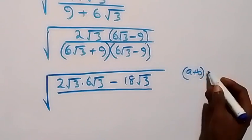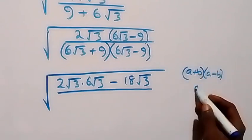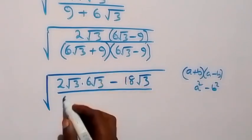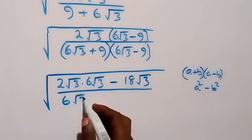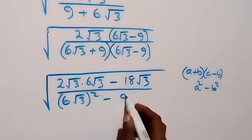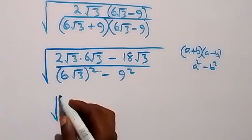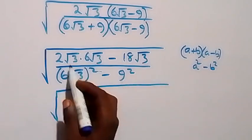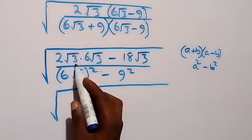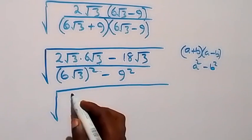The denominator fits into the bracket form a minus b, which we can write as a difference of squares: a squared minus b squared. So what we have now in the denominator is 6 root 3 all squared minus 9 squared. And now from here we square those out: 2 times 6 is 12, root 3 times root 3 is 3, so 12 times 3 is 36.